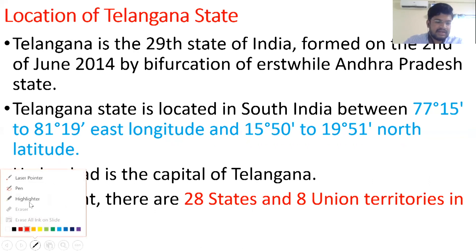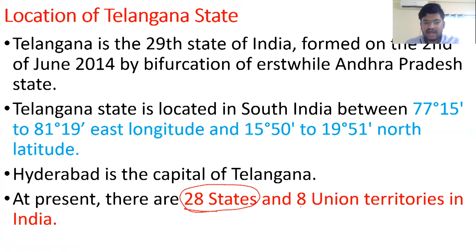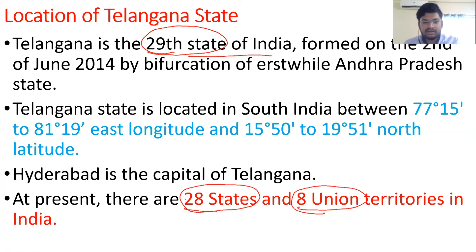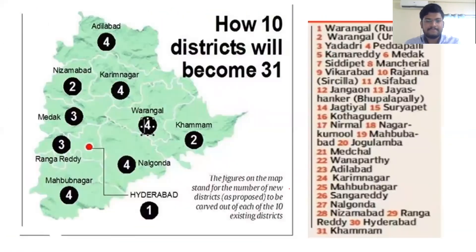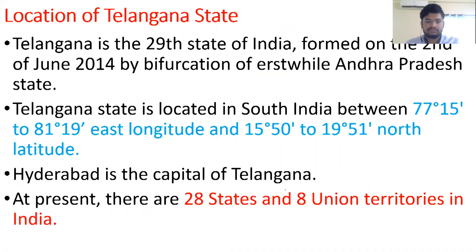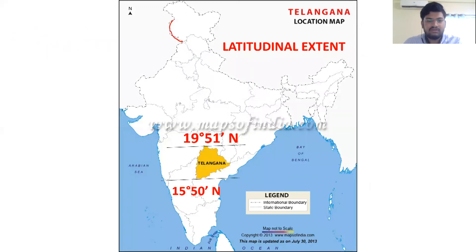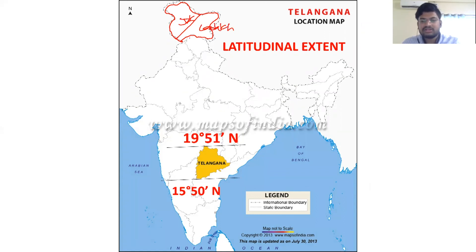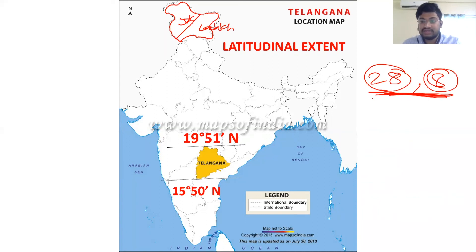At present in India, there are 28 states and 8 union territories. When Telangana was formed, it was the 29th state, but currently there are only 28 states because Jammu Kashmir, which was earlier a state, was divided into two union territories — Jammu Kashmir and Ladakh — in 2019. As a result, we now have 28 states and 8 union territories.